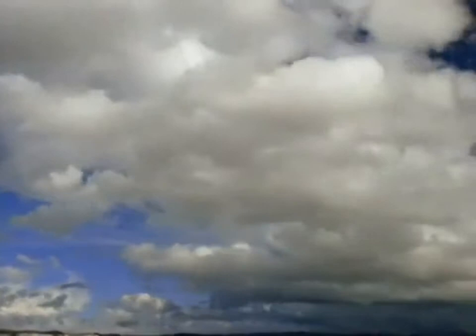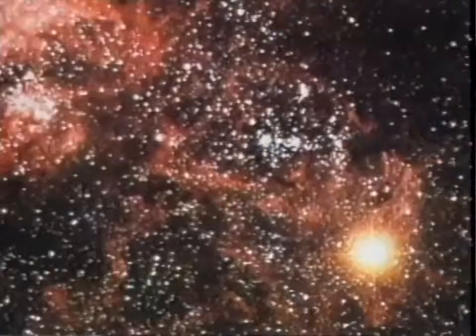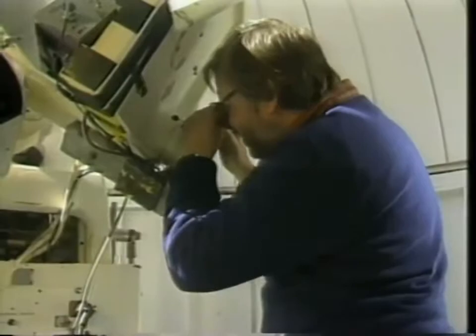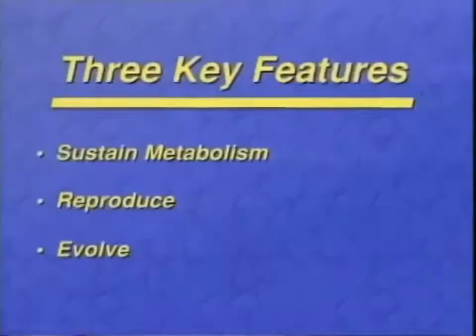The scientific approach to understanding the origin of life assumes that this event was and is a consequence of evolution of the elements, stars, solar system, and the development of a habitable planetary environment. A succinct definition of life is difficult due to limitations in our knowledge, but three key features for life's existence are its ability to sustain metabolism, reproduce, and evolve.